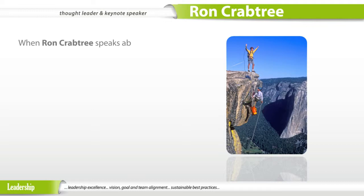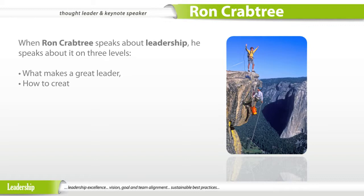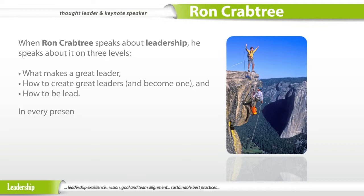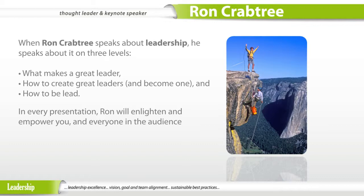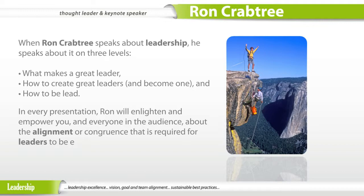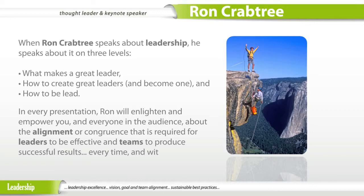When Ron Crabtree speaks about leadership, he speaks about it on three key levels: what makes a great leader, how to create great leaders and become one, and how to be led. In every presentation, Ron will enlighten and empower you and everyone in the audience around the alignment and congruence that is required for leaders to be effective and teams to produce successful results every time and without error.